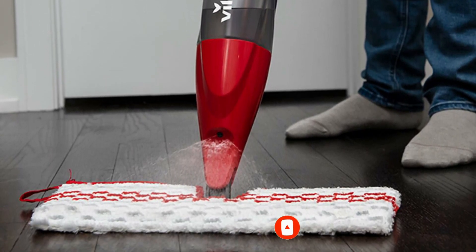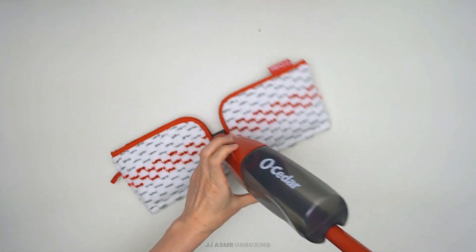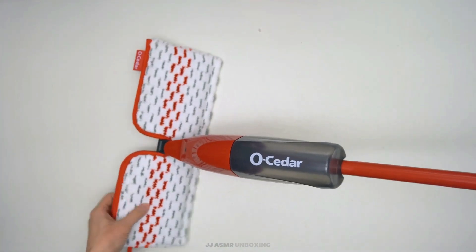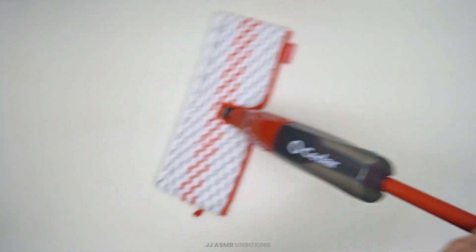When the pads get too dirty, they can be machine-washed for a deep clean. The refillable bottle and spray feature can mist water or vinyl cleaning solution of choice. The spray feature doesn't need batteries and is controllable by a simple handle trigger.